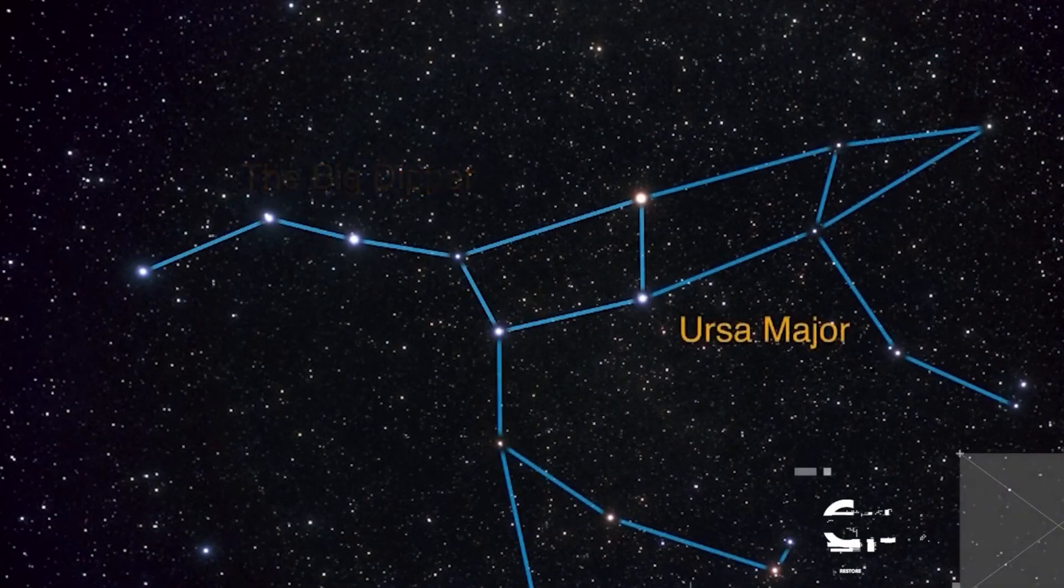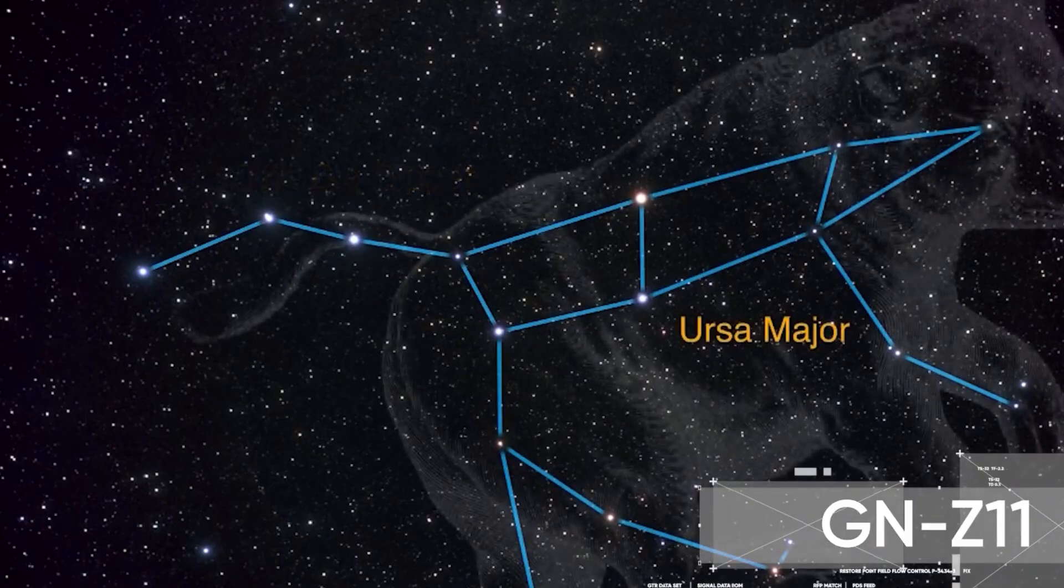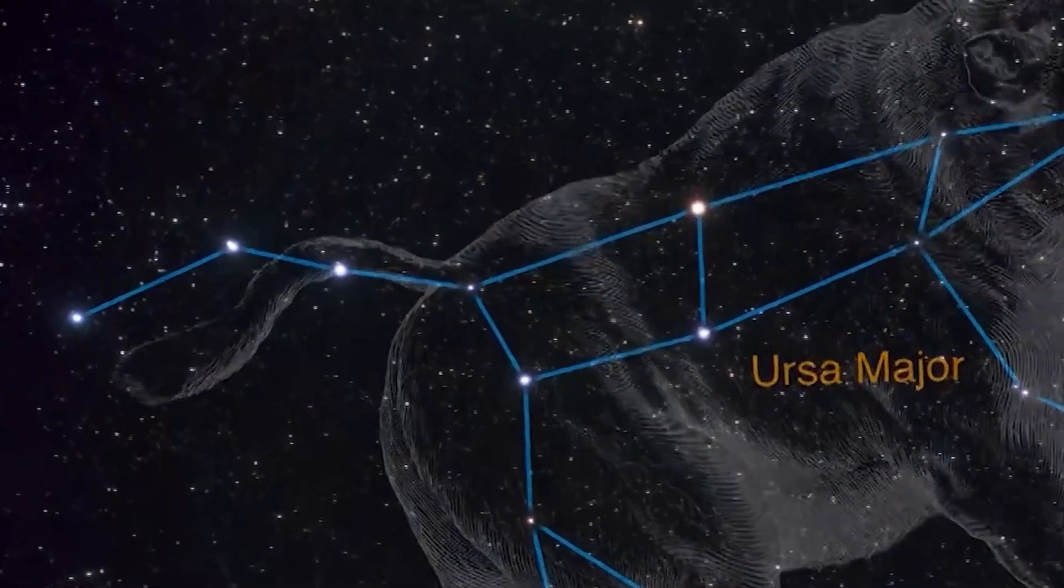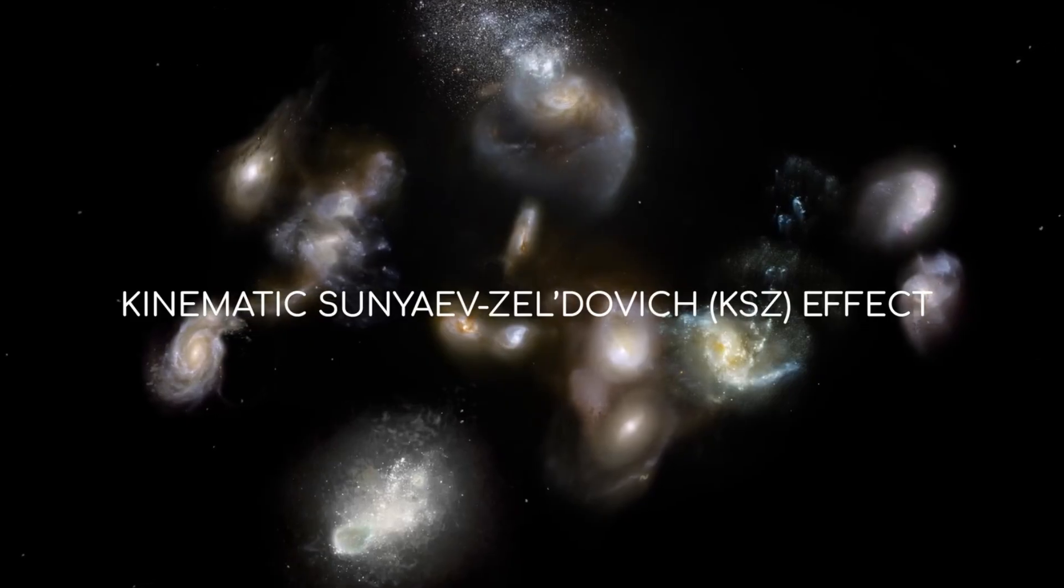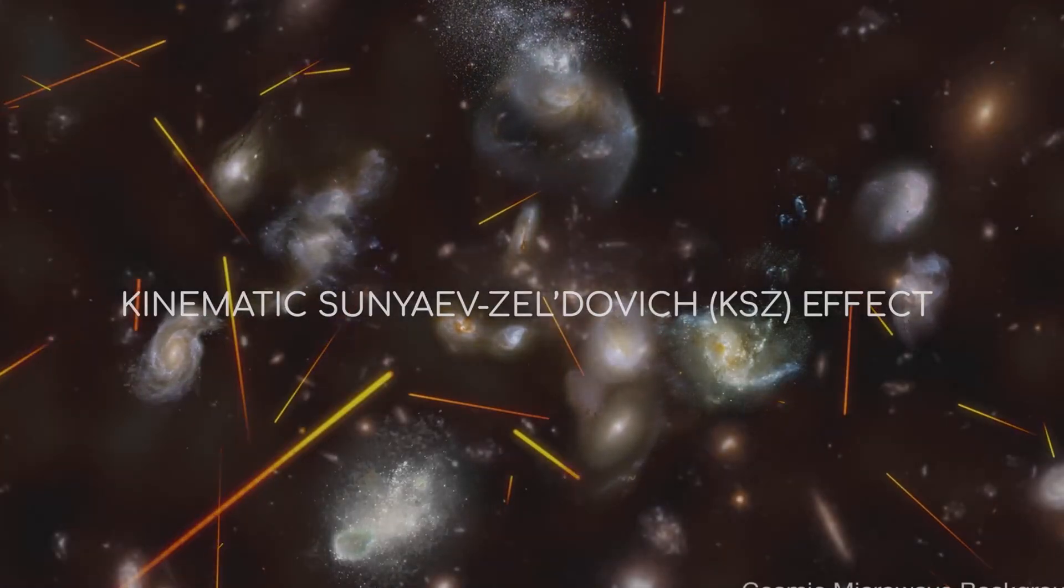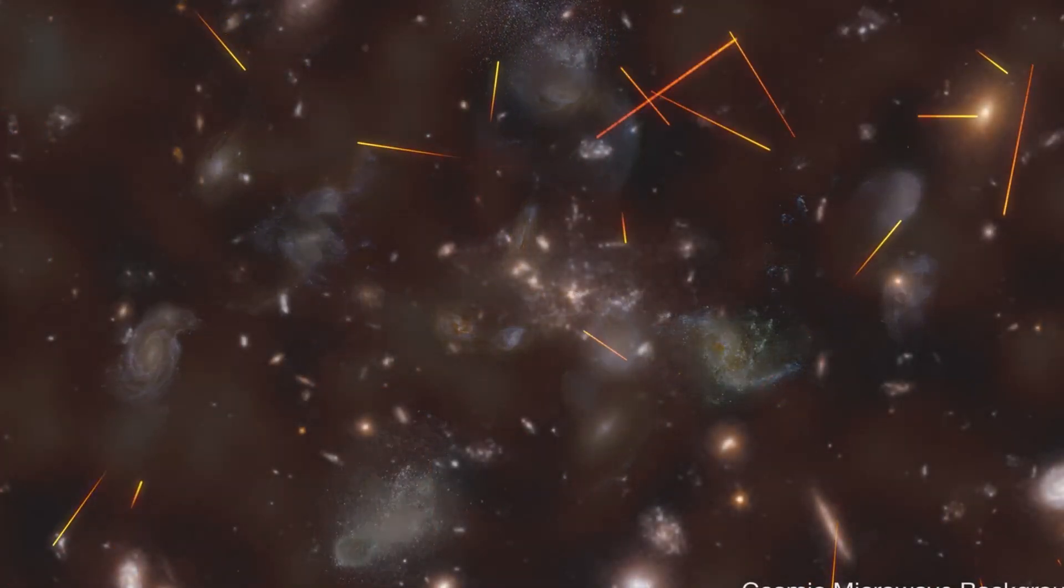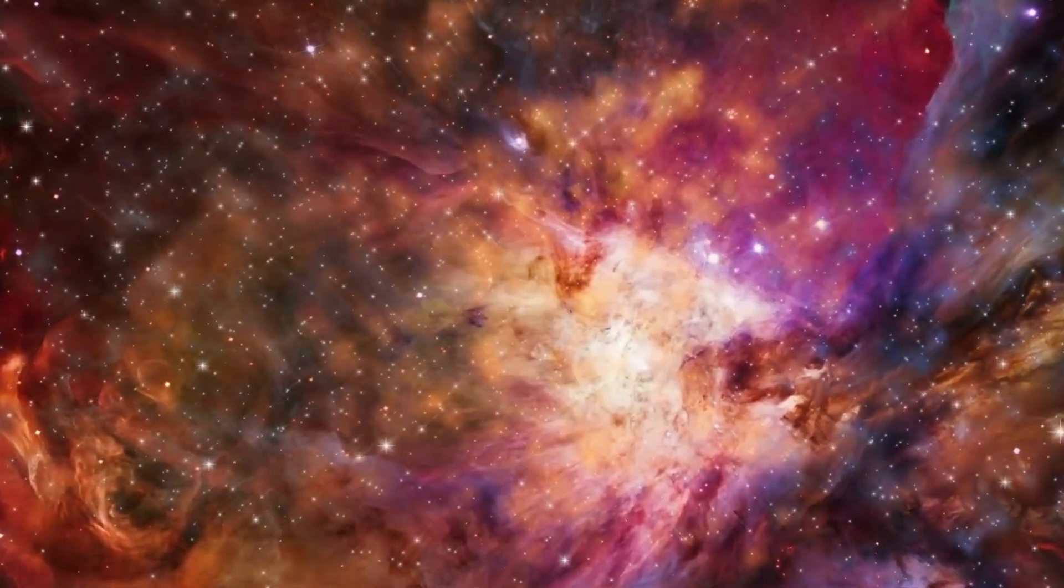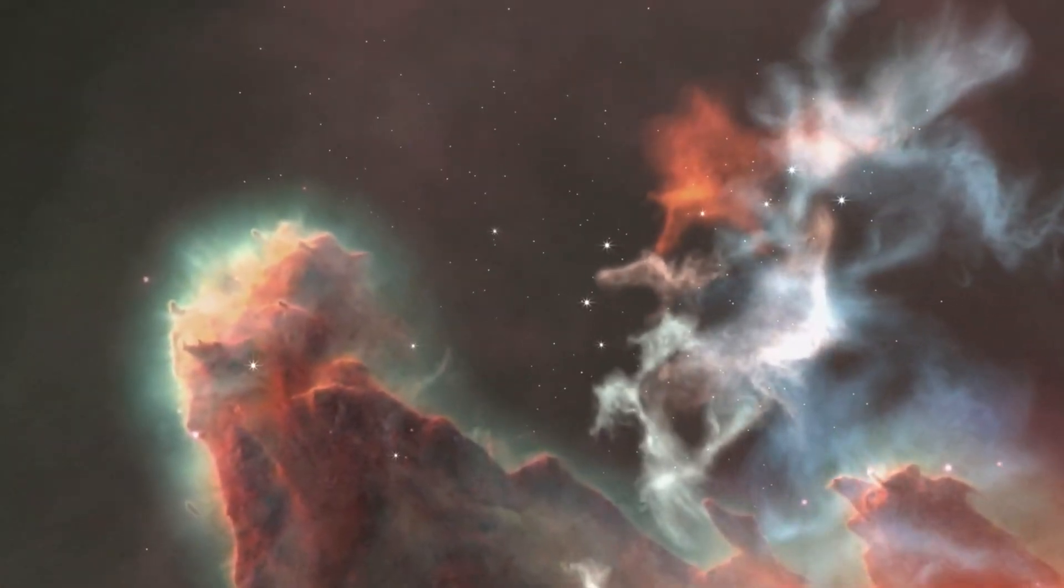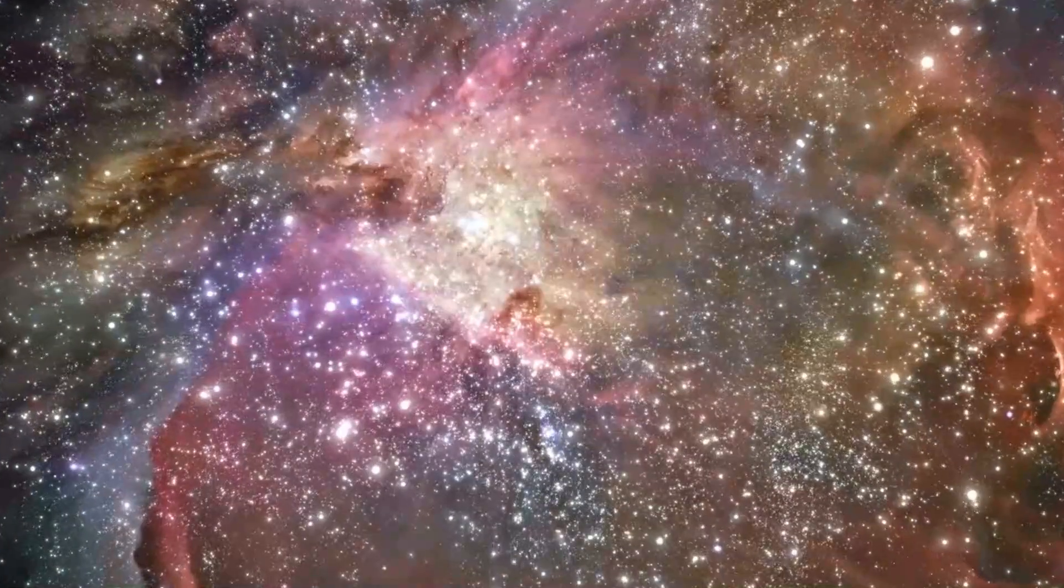Hubble Ultra Deep Field: The famous image known as the Hubble Ultra Deep Field, or HUDF for short, proves that the Hubble Space Telescope can even give us a glimpse into the most remote regions of the firmament. The image taken from September 3rd, 2003 to January 16th, 2004, was for a long time the deepest image of the universe in visible light.